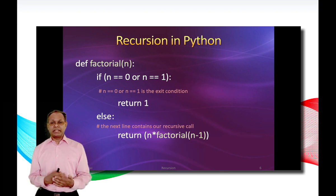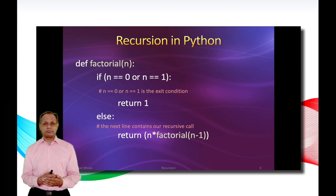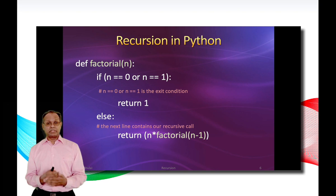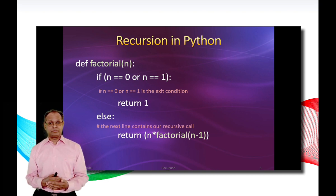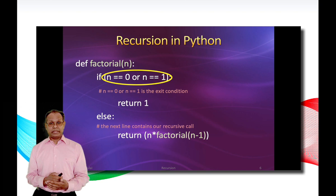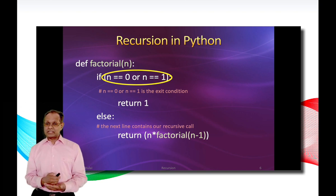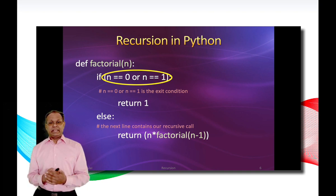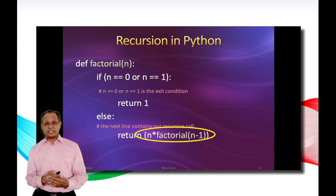Here is an example of recursion in computer science in the Python programming language. In this example we have the same factorial function but now programmed in Python. As you can see, we have in this example two exit conditions: namely n equals zero and n equals one. This is because the value of both n=0 and n=1 is equal to 1. In the else statement, we see that the factorial function is calling itself. This is what we call the recursive call.